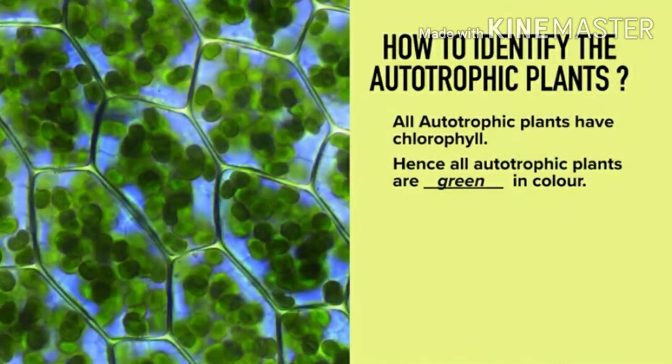Students, how to identify autotrophic plants? All autotrophic plants have chlorophyll. Hence, all autotrophic plants are green in color. Leaves are green in color due to chlorophyll, and this is the identity of autotrophic plants.